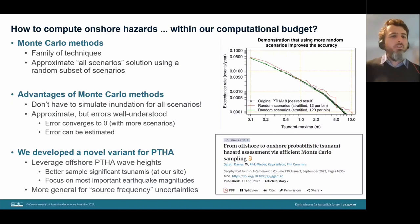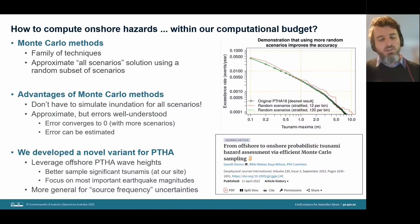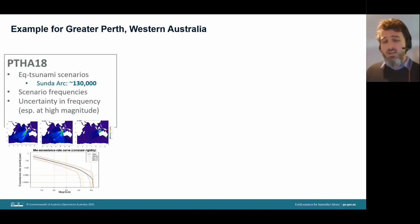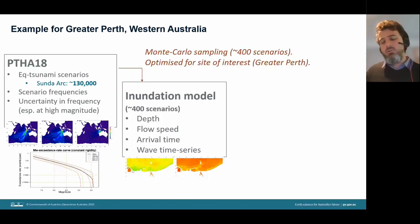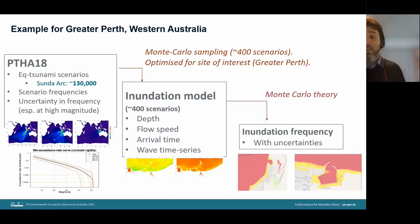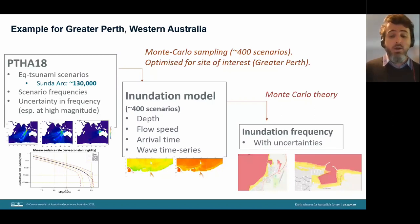For greater Perth in Western Australia: from about 130 scenarios on the Sunda Arc main source, roughly 400 are Monte Carlo sampled in a way optimized for the site of interest, then simulated at full detail down to about 11-meter resolution throughout the greater Perth area. Monte Carlo theory then estimates inundation frequencies and their uncertainties in a rigorous way.